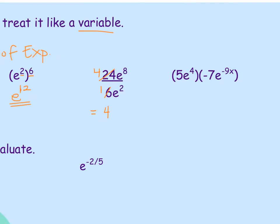And then if we divide e, we're going to take the numerator minus denominator. That would be e to the 8 minus 2 power, which is 4 times e to the 6th. And if we multiply with bases and number values as coefficients, we're just going to multiply the 5 and the negative 7, giving us a coefficient of negative 35.